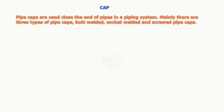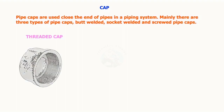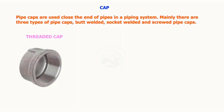Pipe caps are used to close the end of pipes in a piping system. Mainly there are three types of pipe caps: butt-welded, socket-welded, and screwed pipe caps.